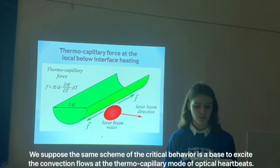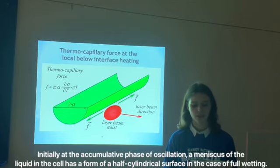We suppose the same scheme of the critical behavior is a base to excite the convective flows at the thermo-capillary mode of optical heating. Initially at the accumulative phase of oscillation, a meniscus of the liquid in the cell has a form of half cylindrical surface in the case of full wetting.